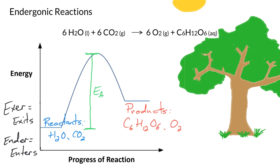But in endergonic reactions, that's not the case. The reactants are more stable than the products. But since we added all that energy to the reaction to begin with, we can reach a new stable point that has more energy than we started.